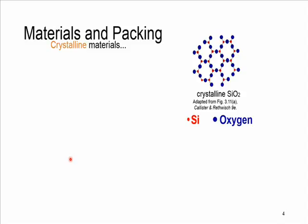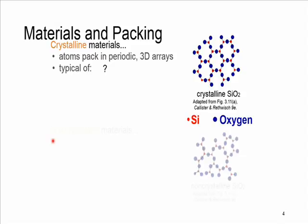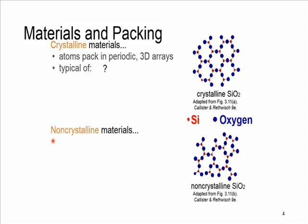If a set of atoms is arranged in a repeated particular way and organized, this is called crystalline structure. Here, atoms are packed in periodic format — they have three-dimensional arrays. Examples are metals, many ceramics, and some polymers. If atoms have no periodic packing, this is called non-crystalline. This happens in complex structures and is mainly due to rapid cooling and amorphous-shaped atoms.